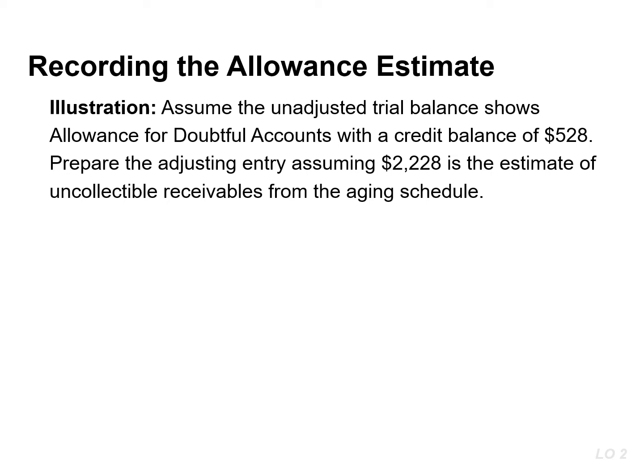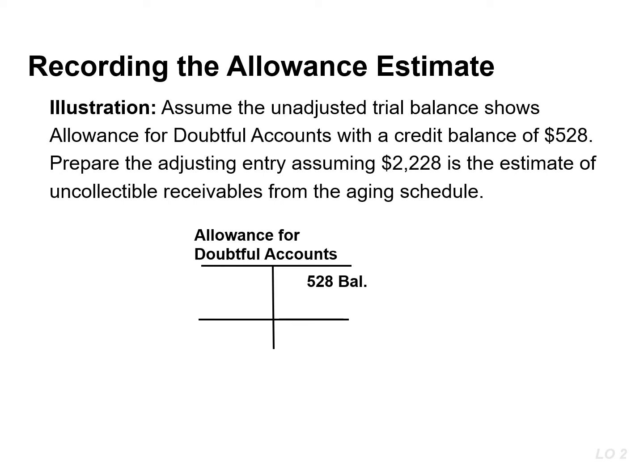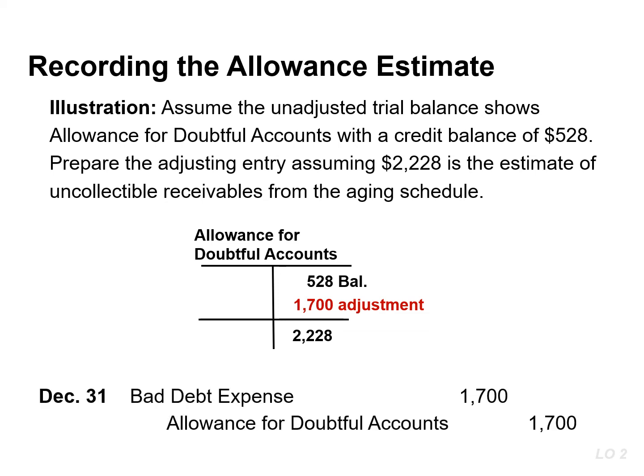The amount of the bad debt expense that should be recorded in the adjusting entry is the amount needed to get to the required or target balance in the allowance account. If the unadjusted trial balance shows allowance for doubtful accounts with a credit balance of $528 — that represents the existing balance — and the aging schedule estimated the uncollectibles to be $2,228, then an adjusting entry for $1,700, which is the difference between the required and the existing balance, would result in a debit to bad debt expense and a credit to the allowance for doubtful accounts in the amount of $1,700.